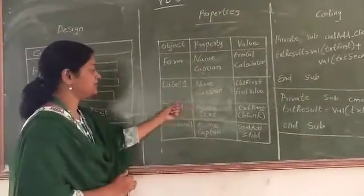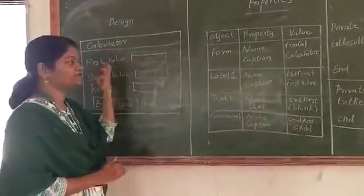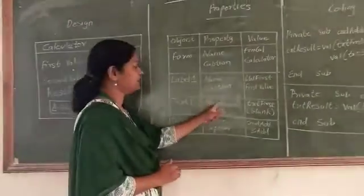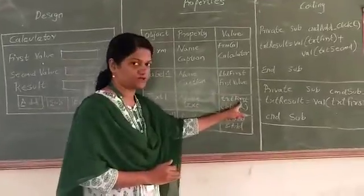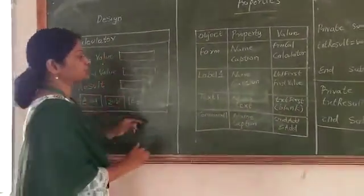The text box name will be related to this particular control. That means we are taking the first input, so the name is going to be txt first. As you see, nothing has been written over here, so the text we are going to keep it blank.